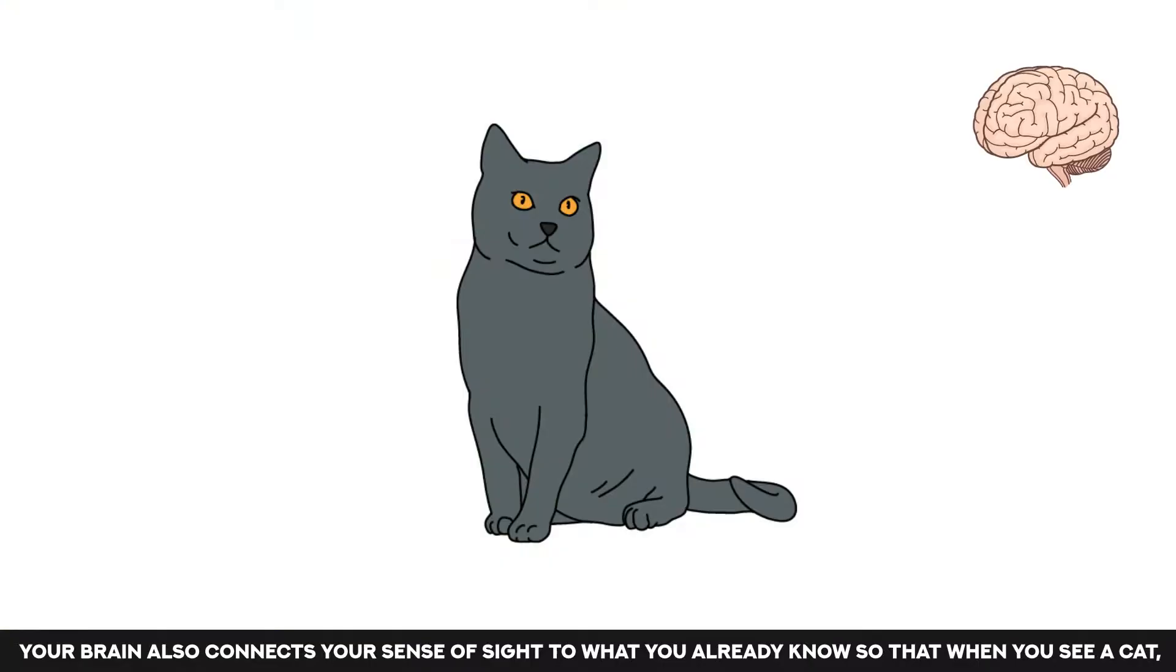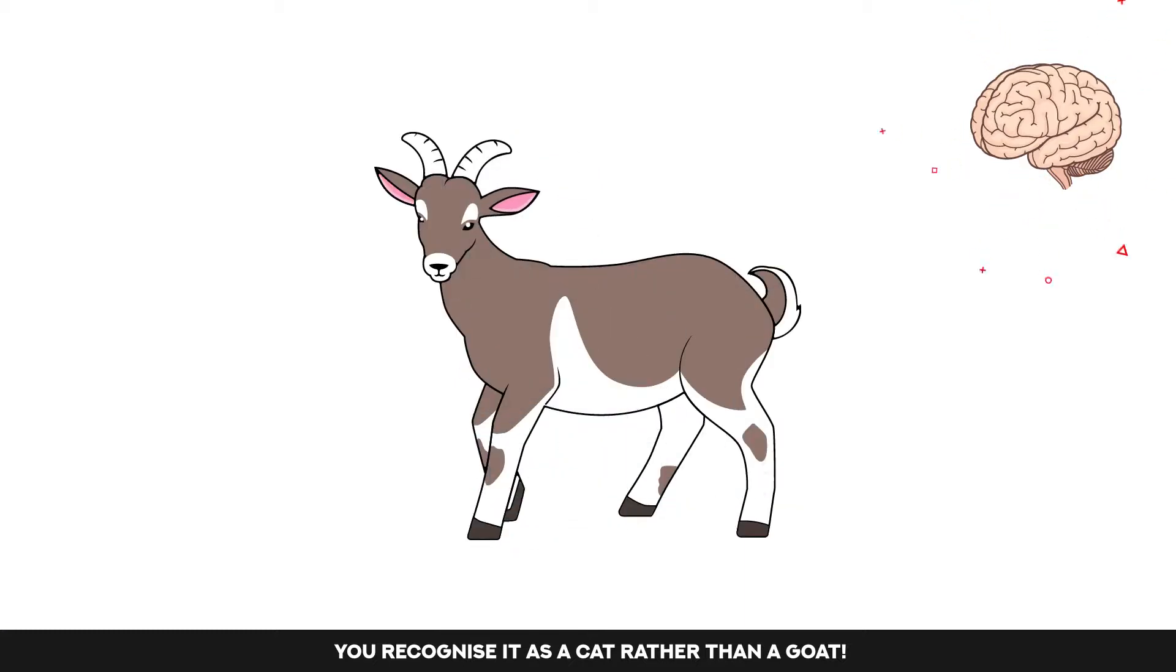Your brain also connects your sense of sight to what you already know, so that when you see a cat, you recognise it as a cat rather than a goat.